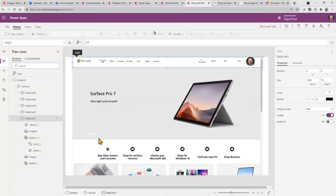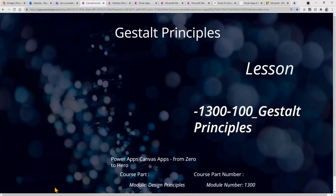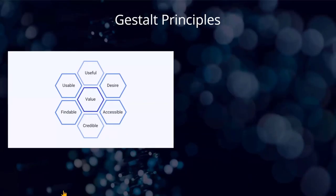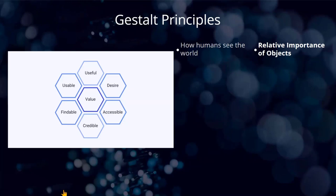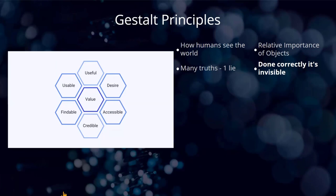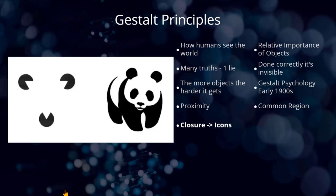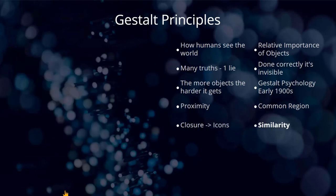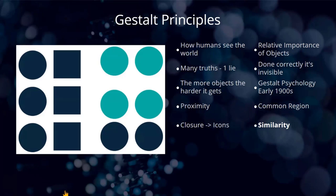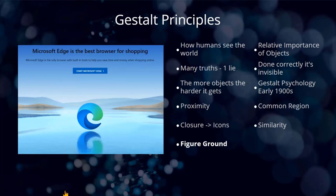So that takes me to the end of the presentation. Let me just go back through and remind ourselves of what we've actually seen. This is about how humans see the world — the relative importance of objects. Done correctly, it's invisible. Lots of objects means it gets harder. It came out in the 1900s. We're talking about proximity, common region, put borders on things, closure for your icons — use icons — similarity to do with colour or shape. And figure-ground is occasionally a useful concept for you as well.